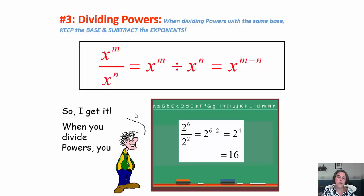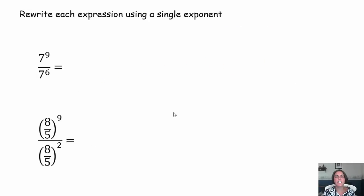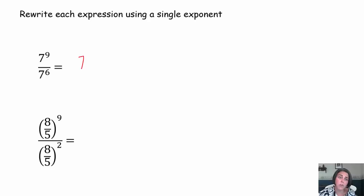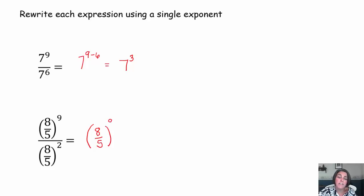When you divide powers, you subtract the exponents. What I'd like you to do now is rewrite each expression using a single exponent — pause the video, try it out, come on back. For the first one, you could have written out nine factors of seven divided by six factors of seven, but a much more efficient way is to just keep the base and subtract the exponents when dividing — that becomes seven to the third. Again, you could write out the factors for eight-fifths, or just keep your base of eight-fifths and subtract: nine minus two is seven, so that's eight-fifths to the seventh.